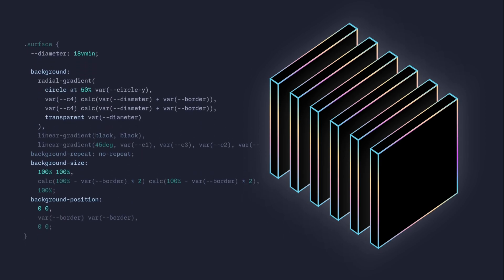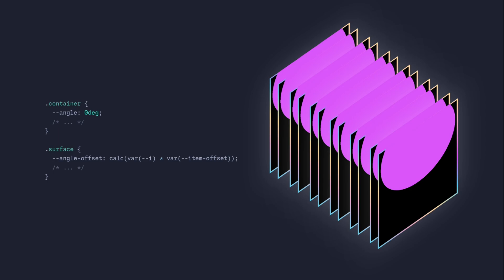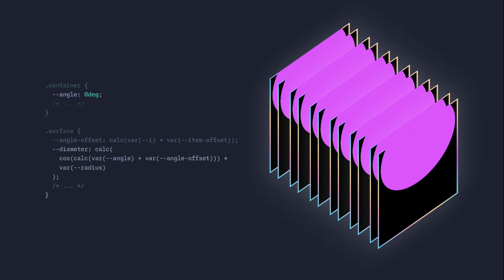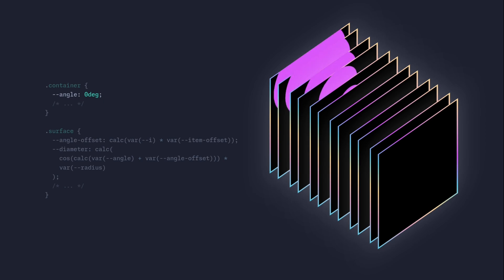For the surface element we're going to add another background layer which is going to be a radial gradient. Right now every circle has an equal diameter, which is not what we want, so for this reason we're going to use some basic trigonometry. On the container we're going to specify an angle at 0 degrees. Then on the surface we calculate the angle offset, and now we can calculate the diameter based on the angle. Now we can observe it moving through time and space.